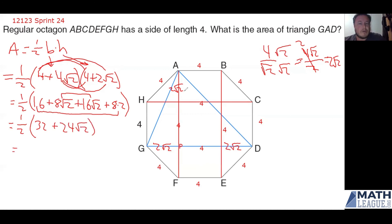And then, of course, I just have to multiply that one half to each of the pieces in the parentheses. Half of 32 is 16. And half of 24 is 12. So 24 root 2 cut in half is 12 root 2. 16 plus 12 root 2 is our answer. And that's how it's done.